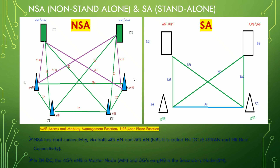Looking at the basic architecture diagram of Non-Standalone and Standalone: in NSA, LTE is connected to the 5G Node B and the LTE Node B, known as eNodeB. The 5G Node B is named ng-eNodeB, which is connected via the X2 interface, and then connected to the MME. This is the basic architecture of Non-Standalone.